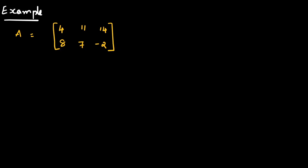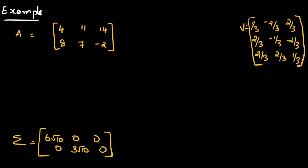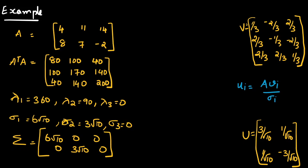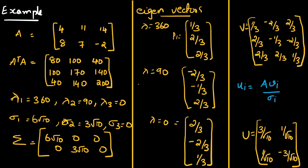Here is another example for a rectangular matrix. Follow the same procedure and find out the answers. The sigma values will be √6, 6√10, 3√10, and the matrices V and U can be computed accordingly. You can do it on your own and compare the answers.